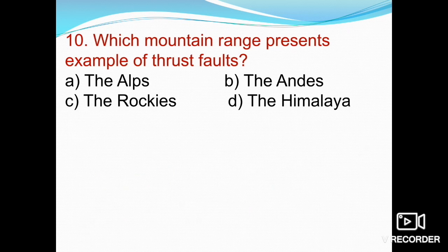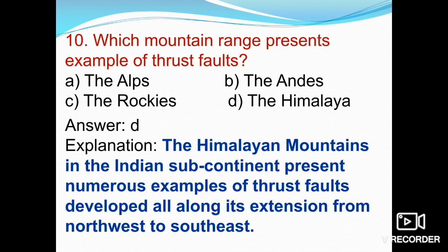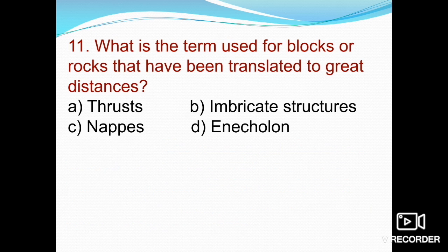The tenth question: which mountain range presents an example of thrust faulting — the Alps, the Andes, the Rockies, or the Himalayas? The Himalayas represent examples of thrust faulting. The Himalayan mountain range in the Indian subcontinent presents numerous examples of thrust faults developed all along its extension from northwest to southeast. Option B, the Himalayas, is correct.